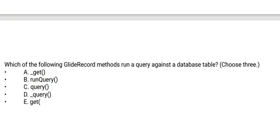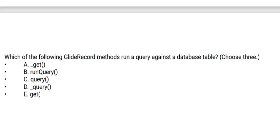Next question: Which of the following GlideRecord methods run a query against a database table? Choose three options. Option A: get. Option B: runQuery. Option C: query. Option D: _query. Option E: get. The correct answer is Option C.